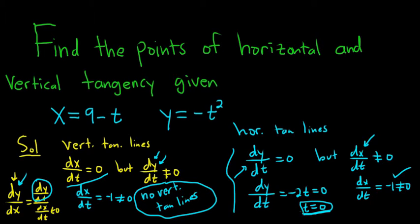Now the question wants the point. So all you do now is you take the 0 and you plug it back into your x and y. So when t equals 0, we get x equals 9 minus 0, so x equals 9. And y equals negative 0 squared, so y equals 0. So we have a horizontal tangent line at the point (9, 0).